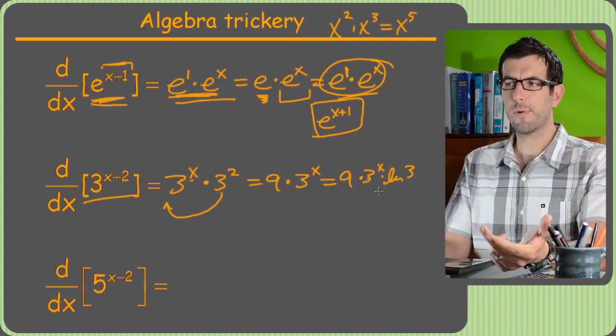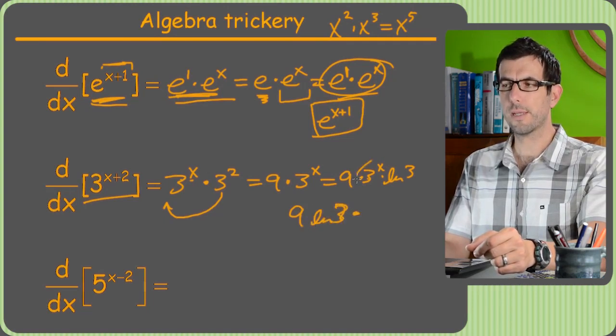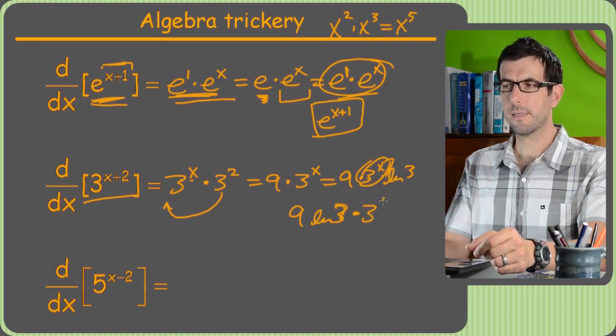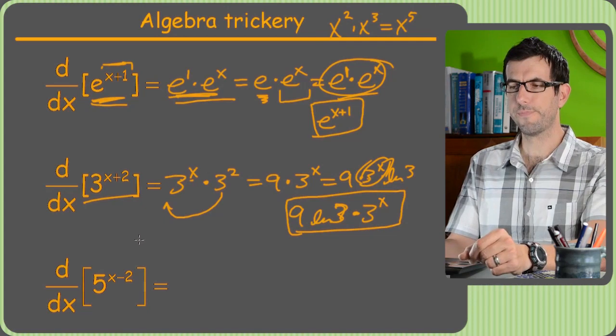So pretty cool. And at that point, we're done. Well, if you really wanted to, you could rewrite it as 9 ln of 3. Just put it in order so that the sort of exponential goes last. It's how I personally like it, but I don't think your teacher will probably care.